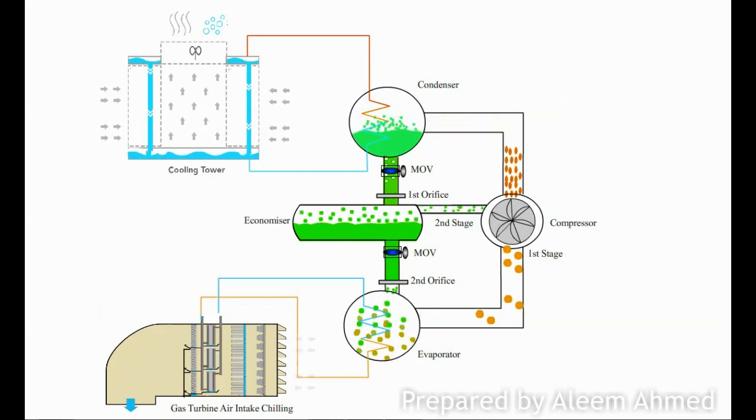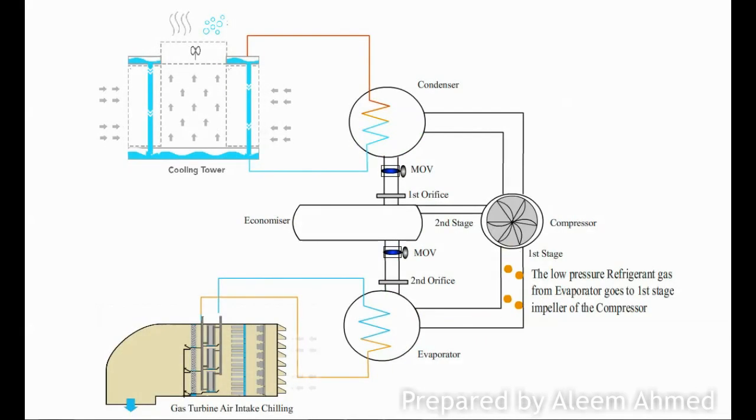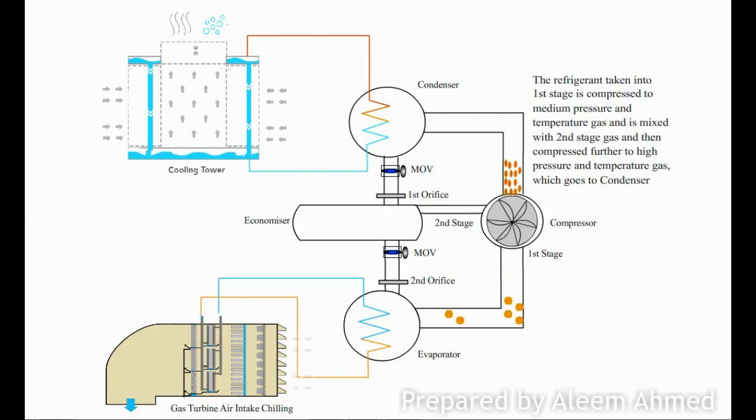Let's see step-by-step details. First, the low pressure refrigerant gas from the evaporator goes to the first stage impeller of the compressor. The compressor first stage increases the pressure and temperature to a medium range.